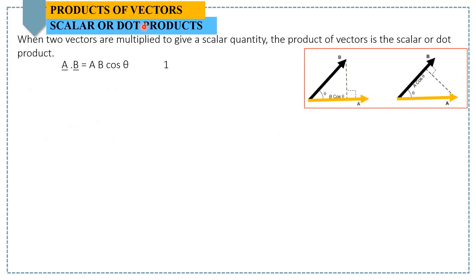We will discuss products of vectors. There are two types: scalar product and vector product. The scalar product is when two vectors are multiplied to give a scalar quantity. Mathematically, a dot b equals a times b times cosine of theta. It is called scalar product because we get a scalar or number after taking the product of both vectors.